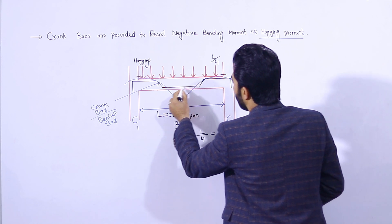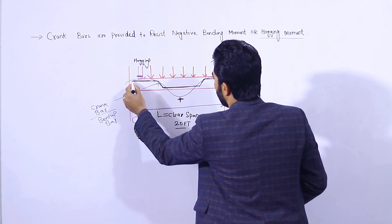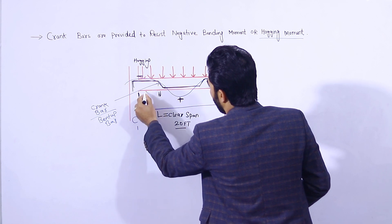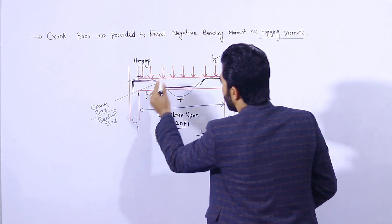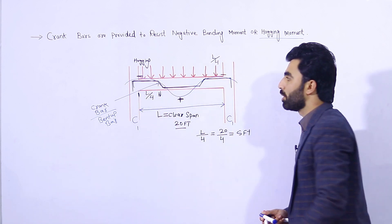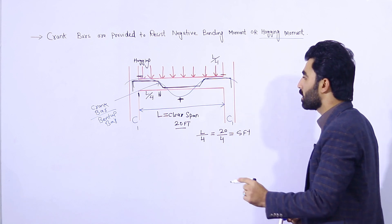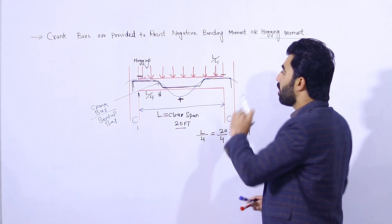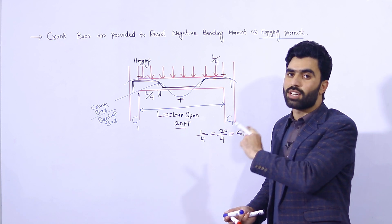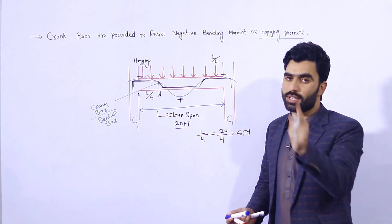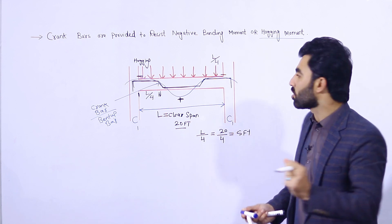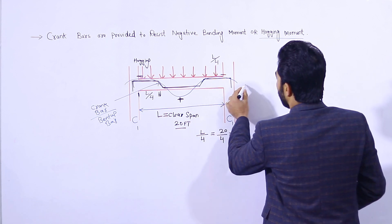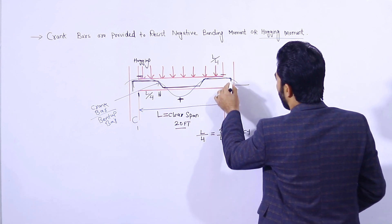To a distance of 5 feet, we are providing the crank bar, as you can see. We bend the bar or crank the bar here at the L/4 distance to resist the negative bending moment, because we have negative bending moment at this place. In place of a crank bar, we can also provide an extra steel rod, which I will discuss in the next video.